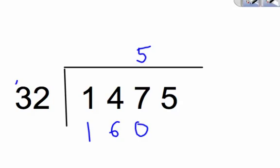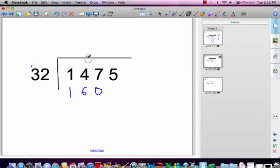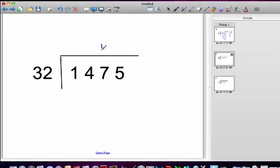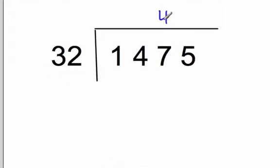Since we came out with a number too big, we're going to try it one less. 2 times 4 is 8. And then 3 times 4 is 12.